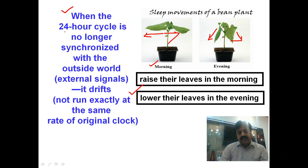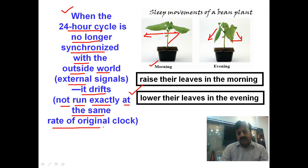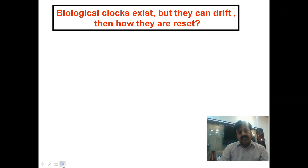When the 24-hour cycle is no longer synchronized with the outside world — when the bean plant or a human is disconnected from natural environmental signals — the circadian rhythm drifts. Drift means it does not run at exactly the same rate as the original clock; it changes. So when any plant or human is cut off from natural signals, their clock drifts and becomes disrupted. But biological clocks exist — they can drift, but they can also be reset.